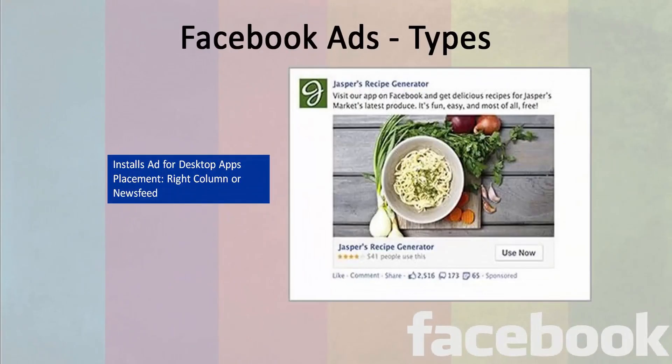Install ads are also available for desktop apps. There are a lot of apps which are available on desktops for users. These kind of install ads can be used to promote those app downloads, and they get placements on the right column of the newsfeed page or on the desktop version of Facebook newsfeed.